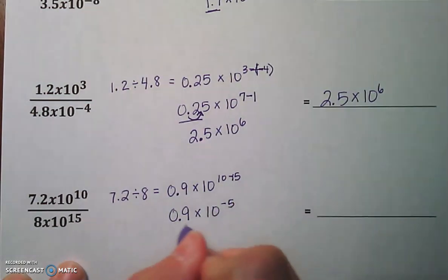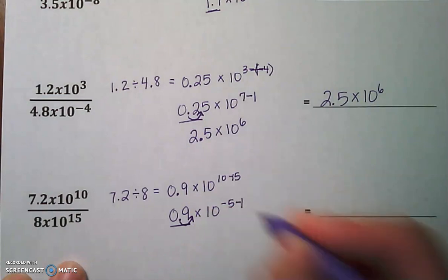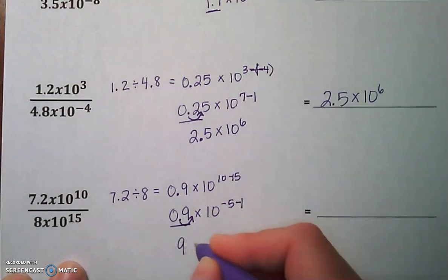We are going to have to adjust our final answer because 0.9 is less than 1. So move the decimal to the right and again, we are going to subtract the exponent. So we get 9 times 10 to the negative 6th power.